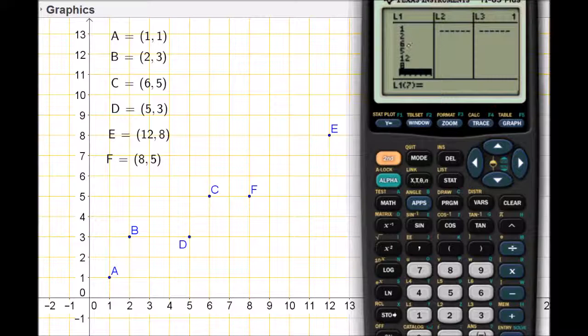I'm going to enter the corresponding y values. It's very important that I get these together because the calculator will be treating these as x, y pairs. So we're inferring that this value x goes with this value y. My y values for these ordered pairs are 1, 3, 5, 3, 8, and we end with another 5.